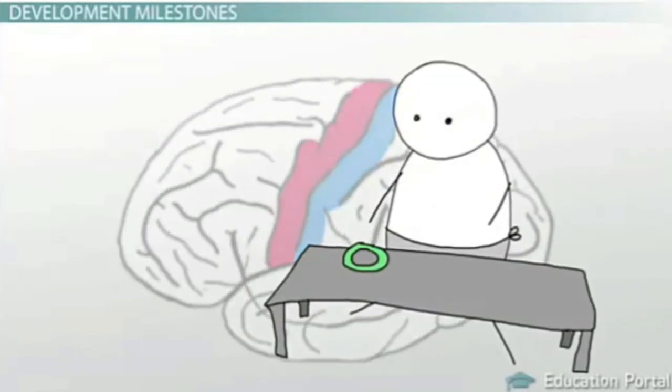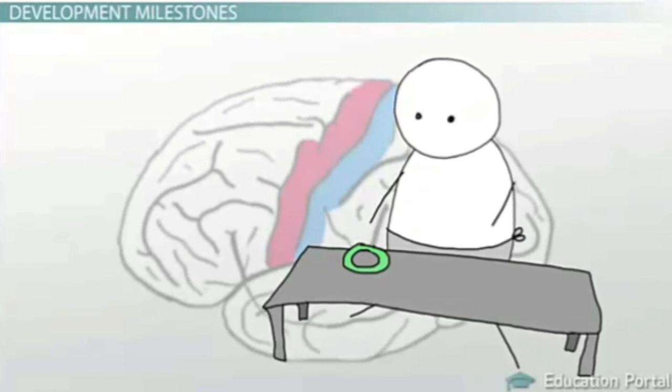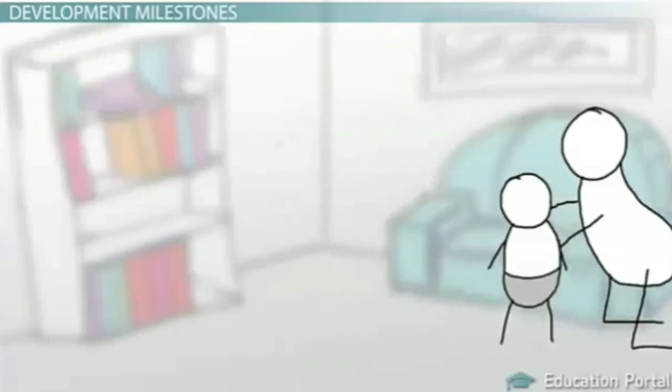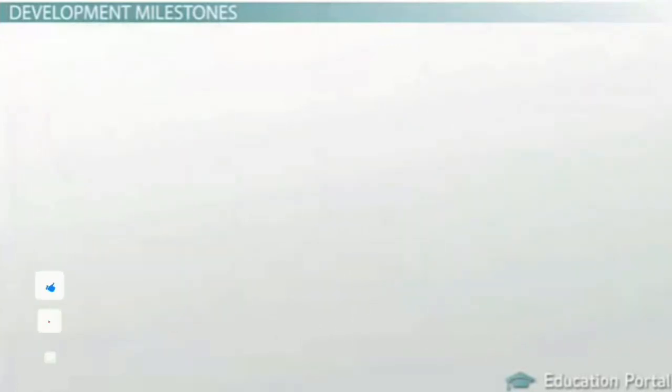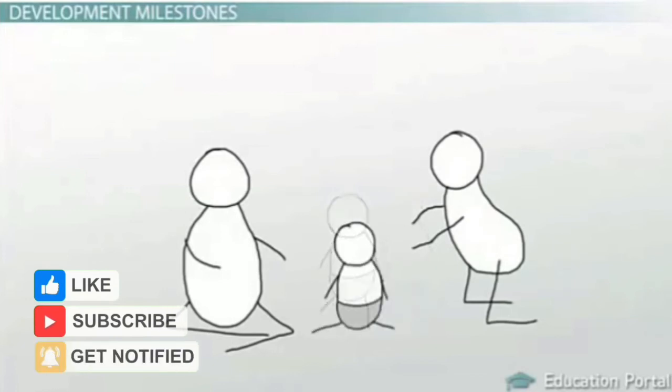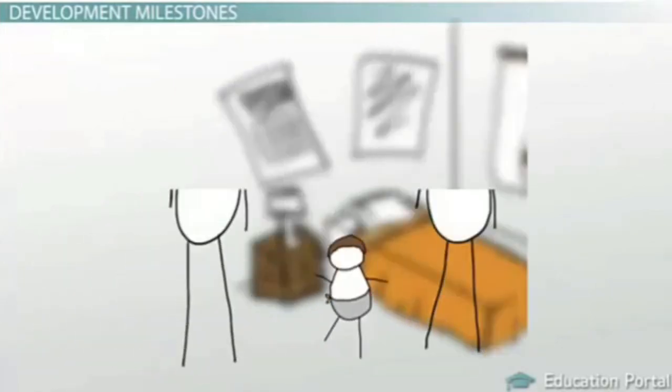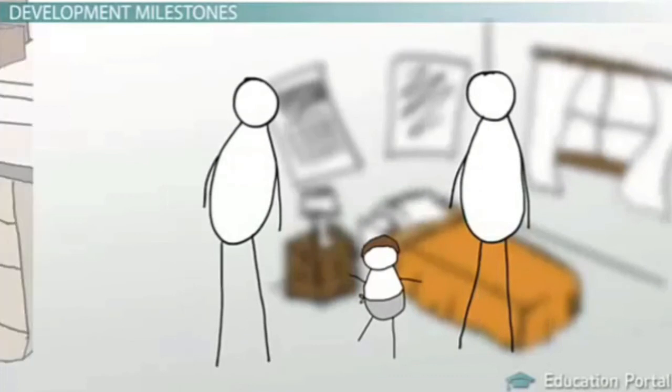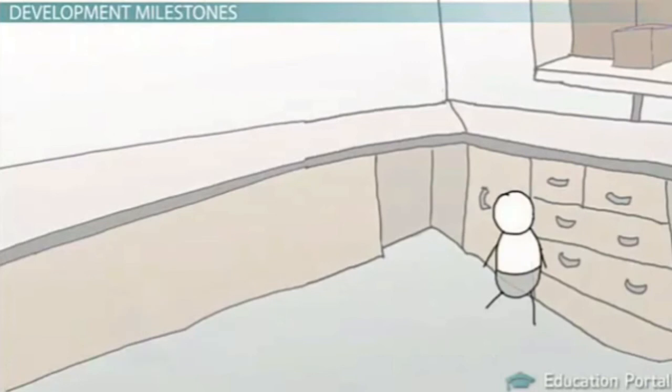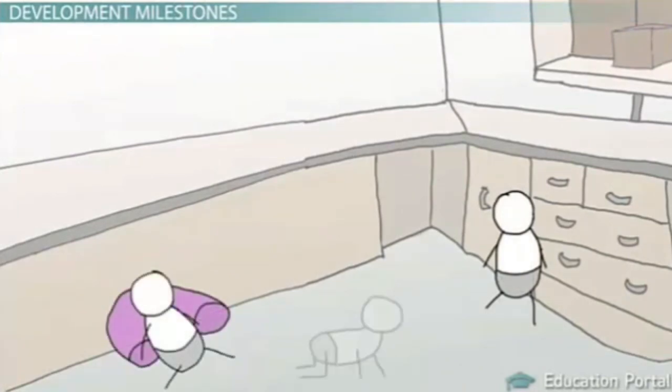He might even be able to stand if he's supported. When a baby is around one year old, he can usually stand unsupported and maybe take a couple of steps. By a year and a half, most babies can walk on their own. This is an important moment because being able to walk allows the baby to explore more territory than he could when he was stationary or crawling.